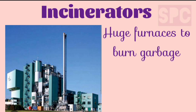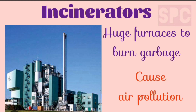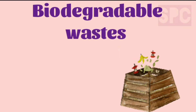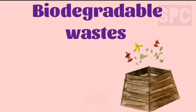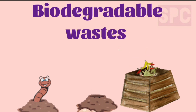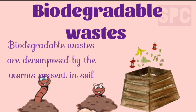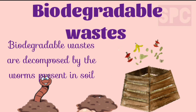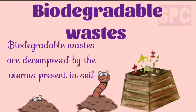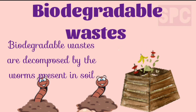In big cities there are incinerators where a large amount of garbage is burned in huge furnaces. These incinerators cause air pollution due to smoke, heat, and bad odor. The biodegradable waste can be dumped in a pit made in the ground and covered with soil. This garbage rots and changes into manure or compost, which can be used to increase the fertility of the soil for growing plants.